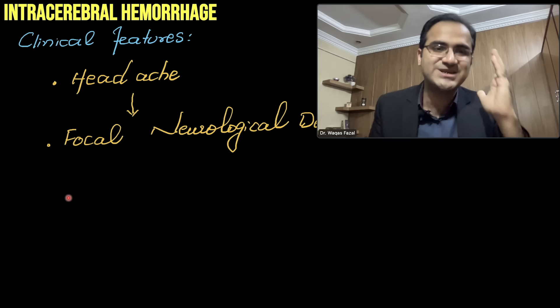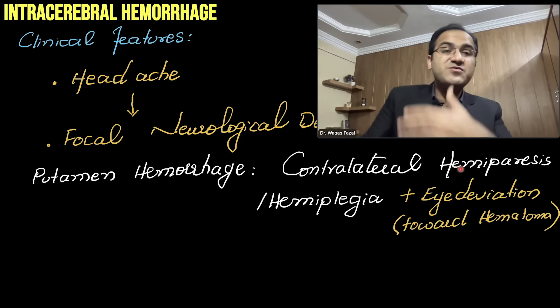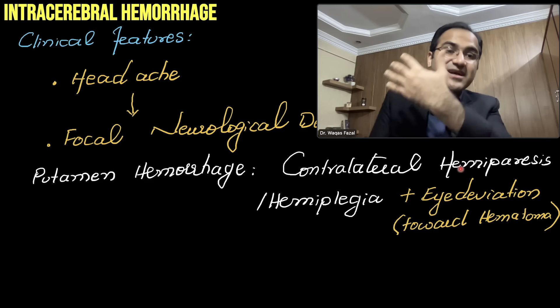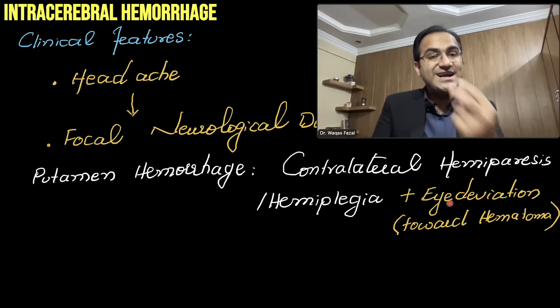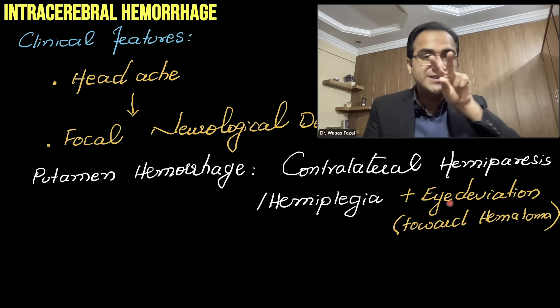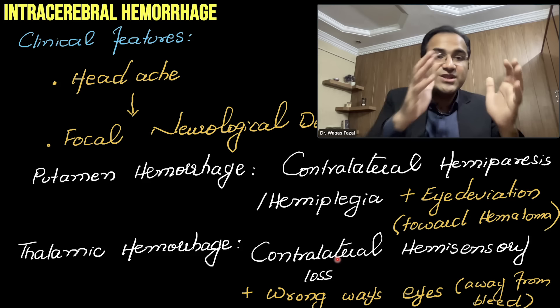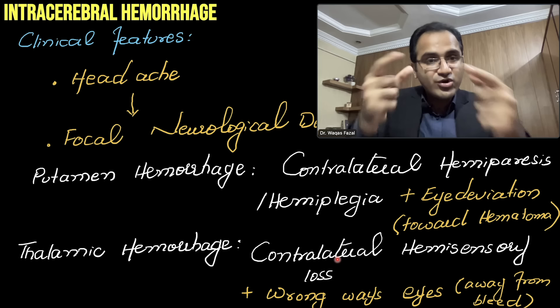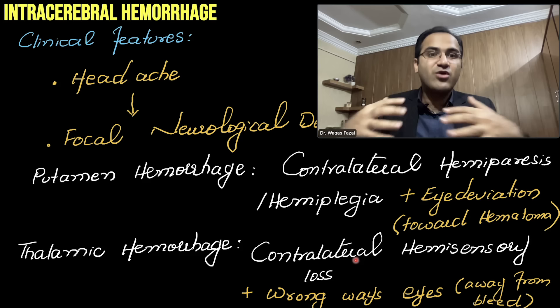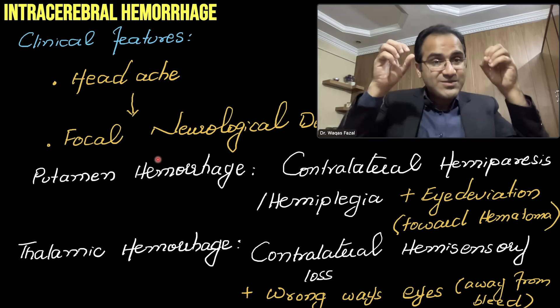In putamen hemorrhage, there will be contralateral hemiparesis — weakness of one side of the body — and hemiplegia. There will also be eye deviation toward the side of the hemorrhage. In thalamic hemorrhage, by contrast, there is more loss of sensation — contralateral hemisensory loss — because the thalamus receives all sensory information from the body. Putamen damage causes motor deficits; thalamic damage causes sensory deficits.